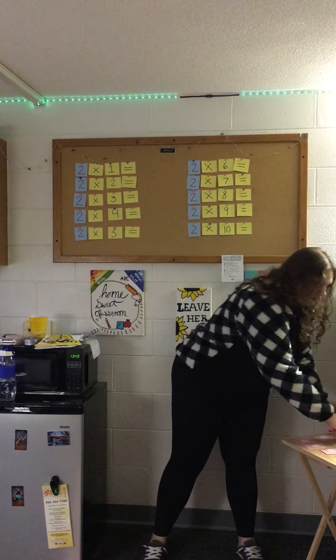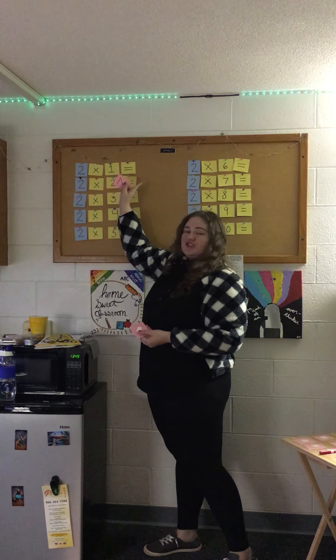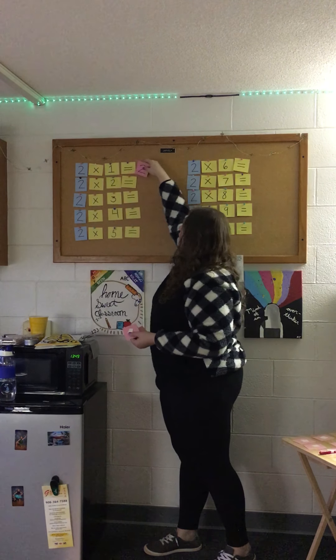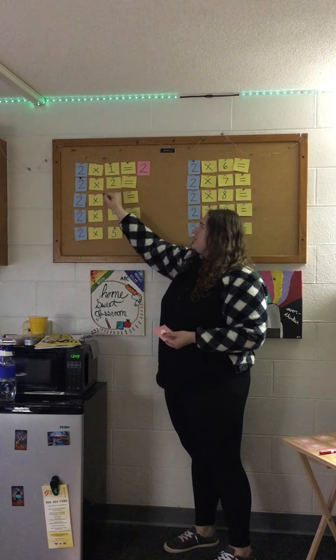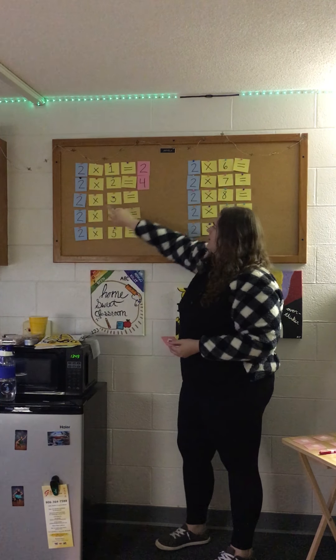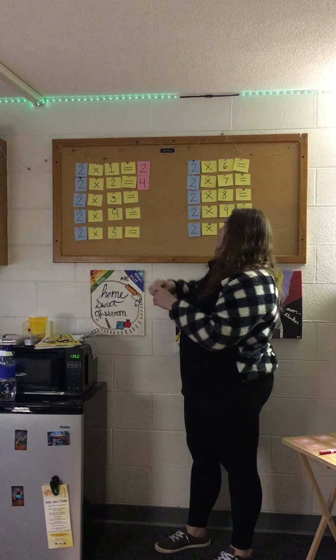So now that we have that down, I want to get started on our two times table from yesterday. Can anyone tell me what two times one is? Exactly, and why is it two? Two times one is two because any number times one equals itself. Good job. So two times two equals four. Two times three? Billy? Right, two times three is six.